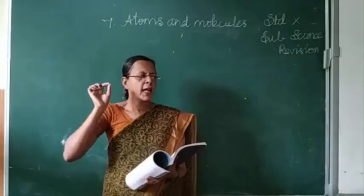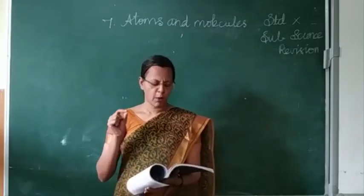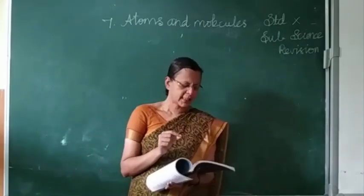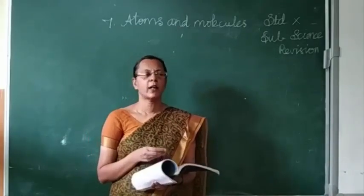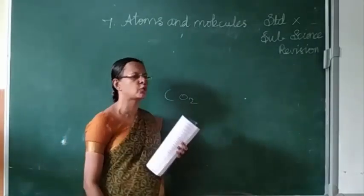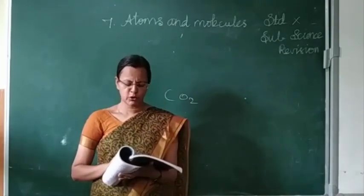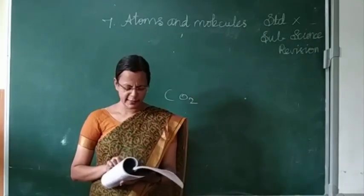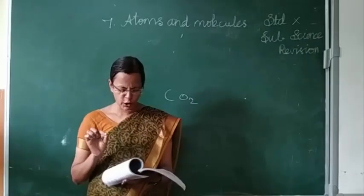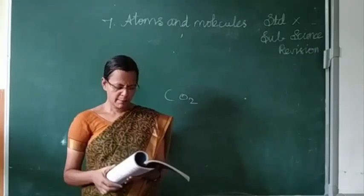Let us revise the correct answers once more. Which of the following has the smallest mass — one mole of atoms of Hg. Which of the following is the triatomic molecule — carbon dioxide. Why carbon dioxide? CO₂ has one carbon and two oxygen atoms — totally three atoms. Volume occupied by 4.4 gram of CO₂ at STP — 2.24 liters. Mass of one mole of nitrogen atom — 28 gram. Which of the following represents 1 AMU — 1/12th of the mass of C-12 atom.